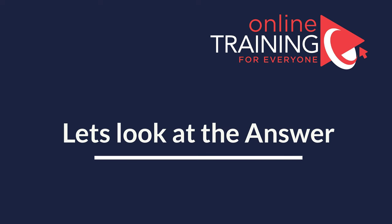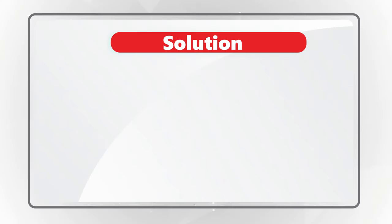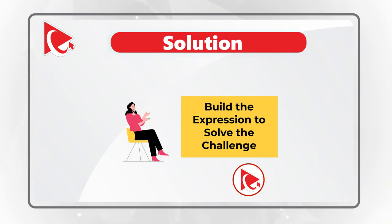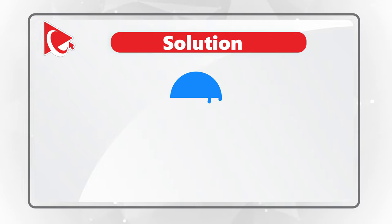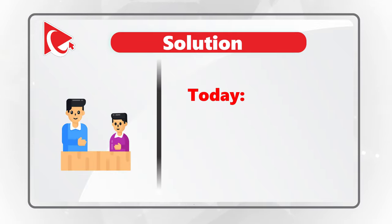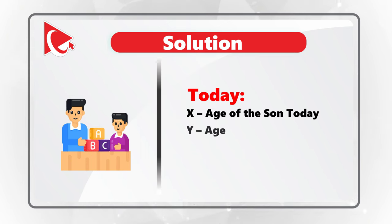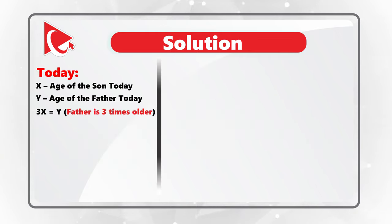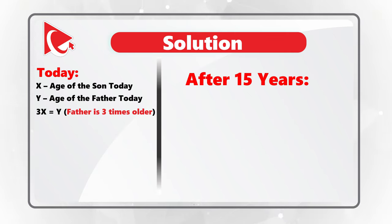One of the ways to solve this problem is to take a number from the solution and see if the math works. But instead, we're going to build an expression. We introduce two variables: x represents the son's age today and y represents the father's age today. Our first formula is 3x equals y, indicating today the father is three times older than his son. After 15 years, the expression becomes y equals 2x plus 15.